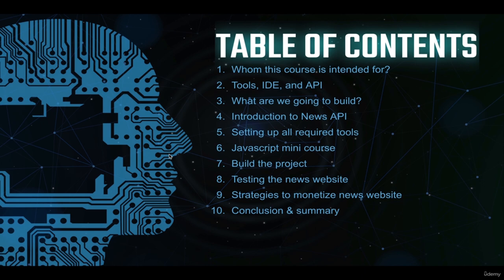Chapter six is the JavaScript mini course — or crash course, whatever you want to call it. If you're confident with your JavaScript skills, feel free to skip that chapter. However, if you're not confident and want to be better prepared, make sure you stay and pay close attention. We're going to learn four things: how to declare variables, how to build functions and pass parameters, how to write conditional if-else statements, and different data types in JavaScript. If you're familiar with those concepts, just skip chapter six.